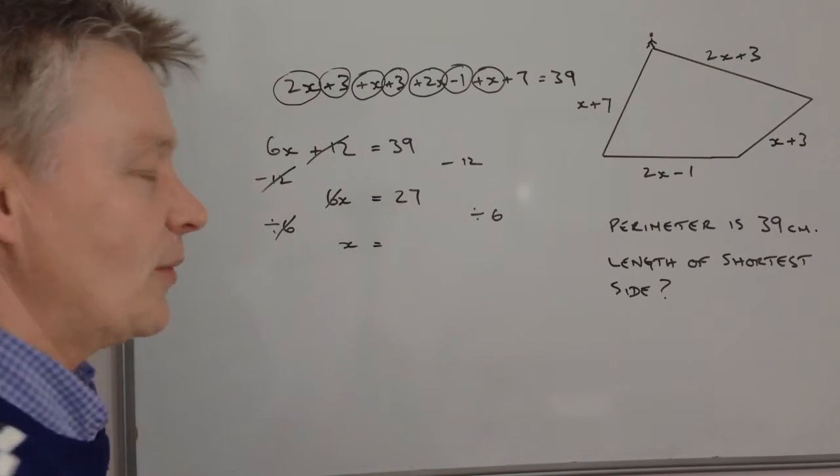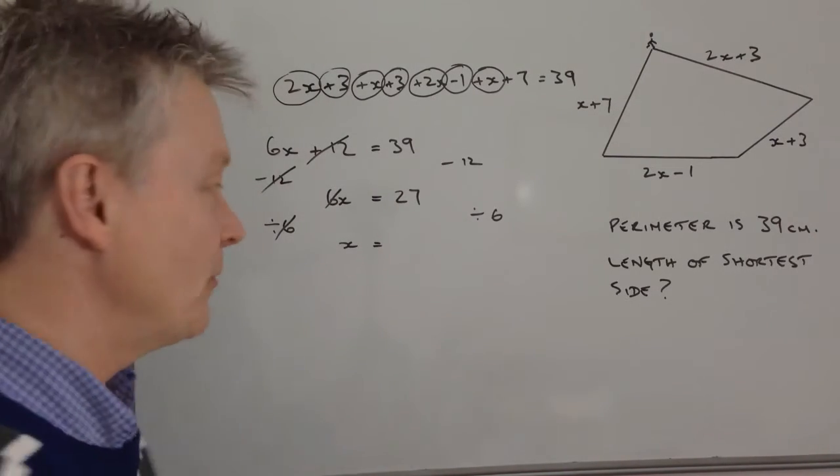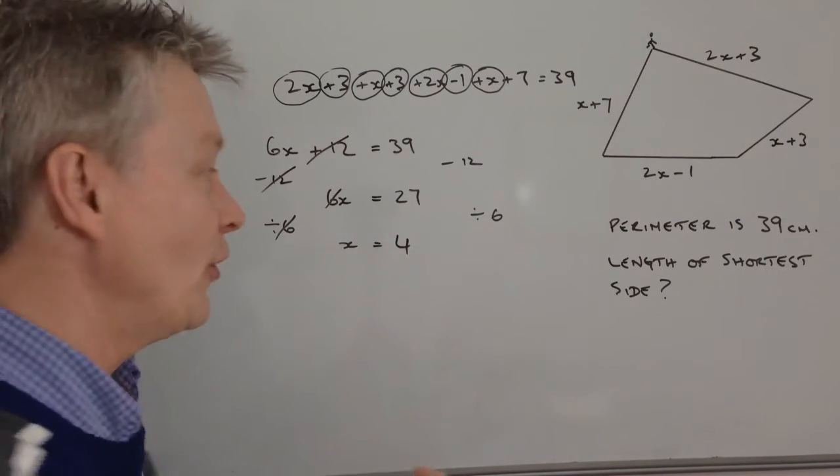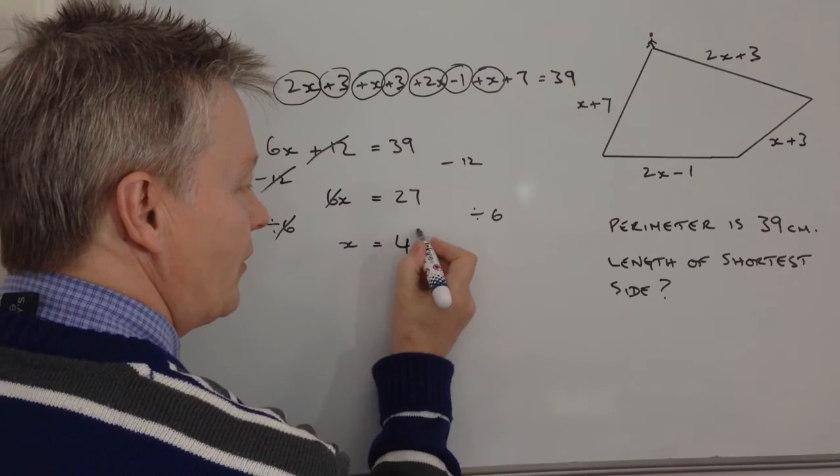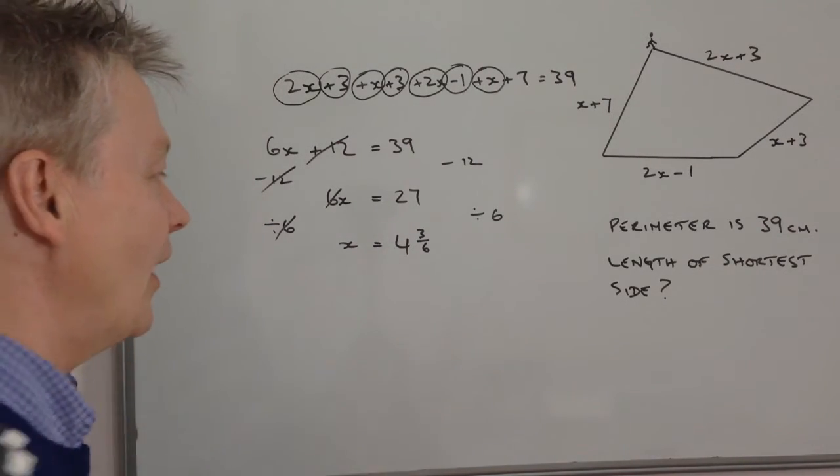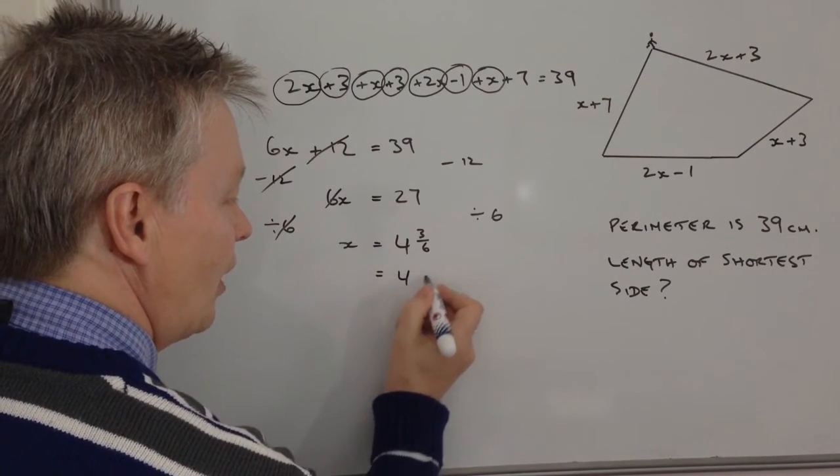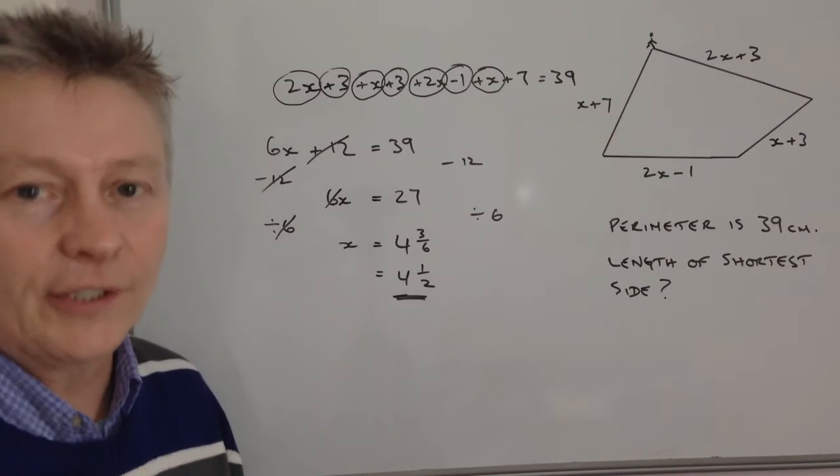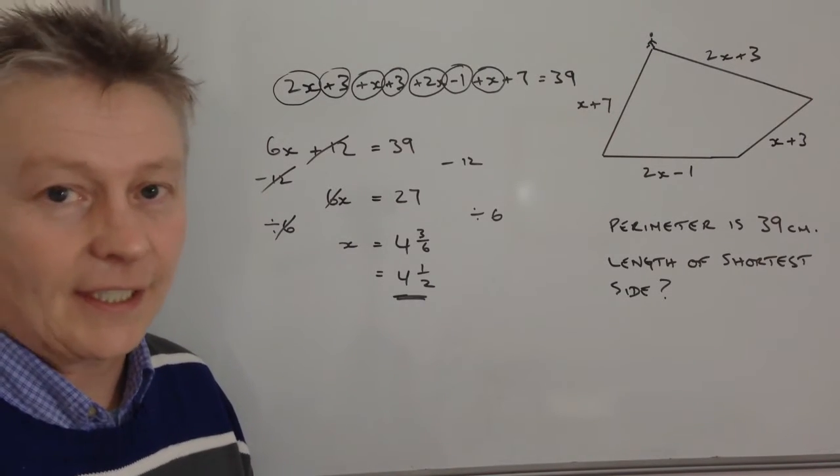And I've got 27 divided by 6. Well, 6 will go into 27 four times. Four times 6 is 24, and then I've got 3 left over. So it's 24 and 3 out of a group of 6. And if you want to simplify that even further, it becomes 4 and a half. So the value of X is 4 and a half.